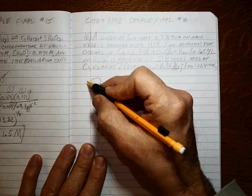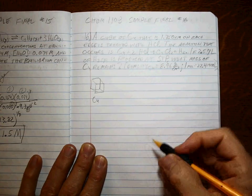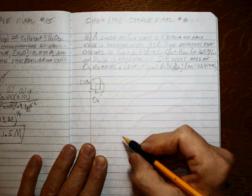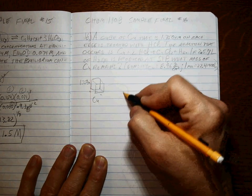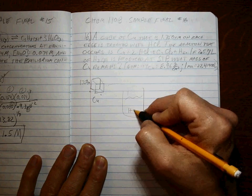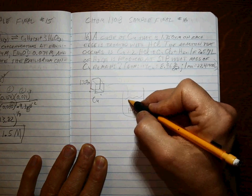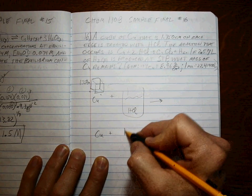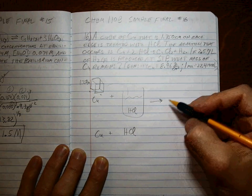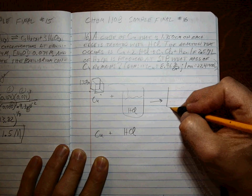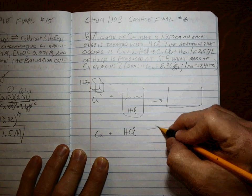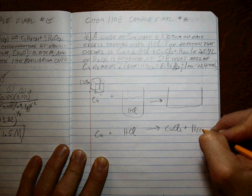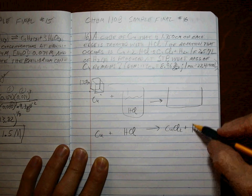There's your cube of copper. That is 1.750 centimeters on each edge. It's treated with HCl. You can see the cube getting thrown into the HCl. Cu plus HCl.